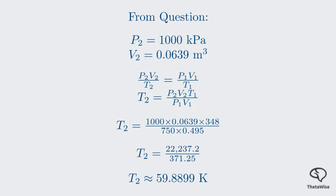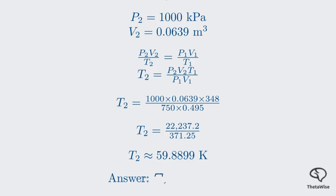This calculates to approximately 59.899 Kelvin. Rounding to three decimal places, the thermodynamic temperature is 59.890 Kelvin. The memo gives 59.89 K, which is the same value, but arrived at using incorrect input values for P₂. Our calculation using the correct values from the question provides the verified answer.